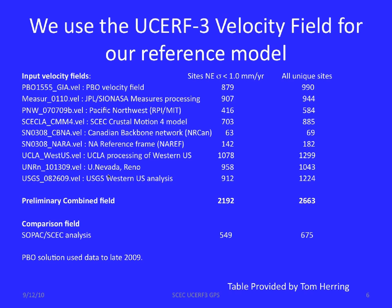The reference field is derived from the USURP-3 velocity field, which is a consensus velocity field built on a long history of GPS, both campaign and continuous efforts. The PBO velocity field is part of this, along with measurements from NASA, JPL, the MEASURES processing, Pacific Northwest campaign-type data from RPI and MIT, data from the SCEC crustal motion model, the Canadian Backbone Network, the North American reference frame solution, UCLA processing of the Western U.S., University of Nevada Reno, and USGS Western U.S. analyses.